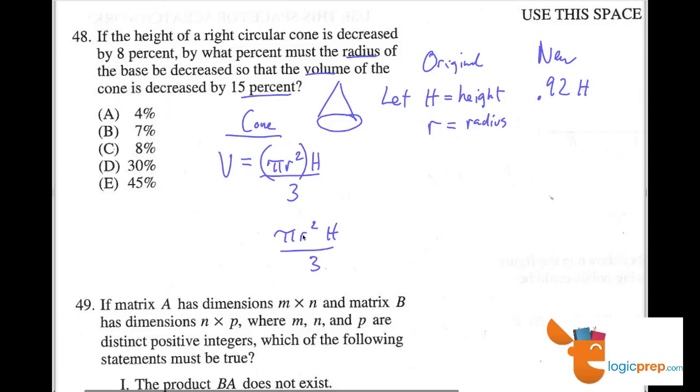But now we want to take this original and we want to decrease it by 15%. So if we're going to decrease this original by 15%, we want to multiply and take 85% of it, 0.85, times this equation.